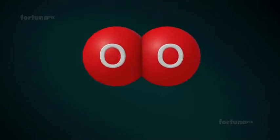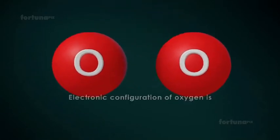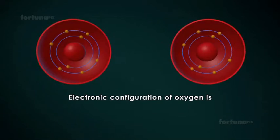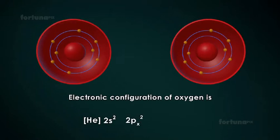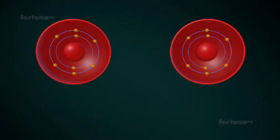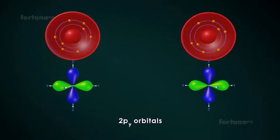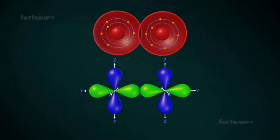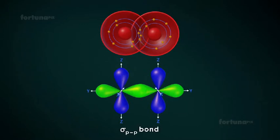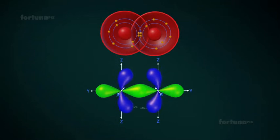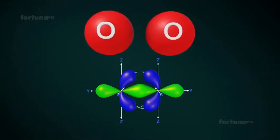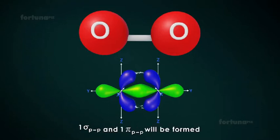Let's look at the pi bond of an oxygen molecule. The electronic configuration of oxygen is Helium, 2s2, 2px2, 2py1, 2pz1. The half-filled 2py orbitals of two oxygen atoms will overlap along the inter-nuclear axis to form a sigma-pp bond. The remaining half-filled 2pz orbitals will overlap laterally to form a pi-pp bond. As a result, a double bond, one sigma-pp and one pi-pp, will be formed between the two oxygen atoms.